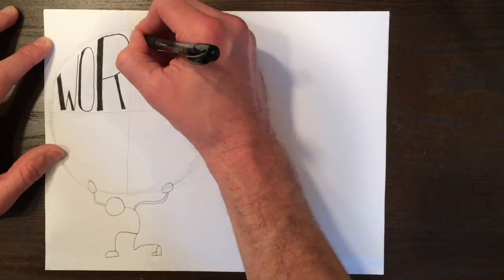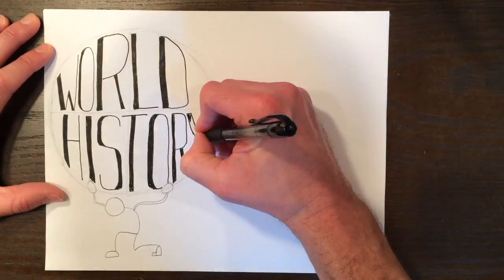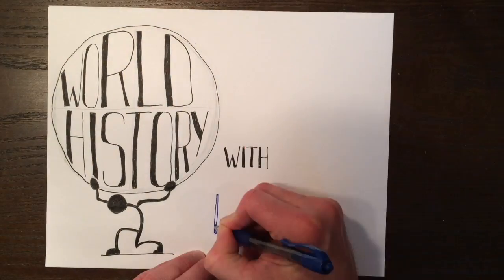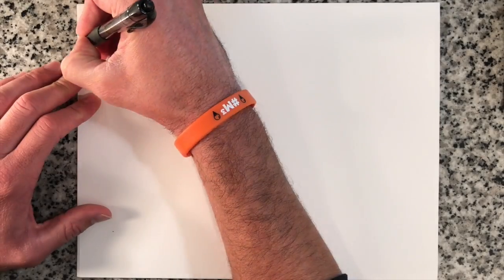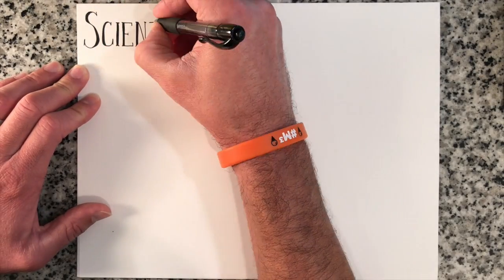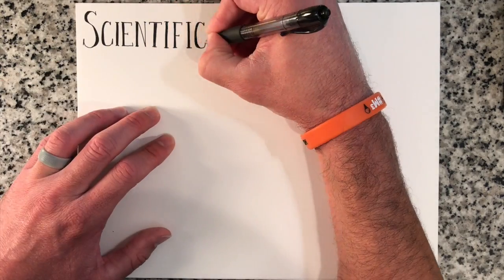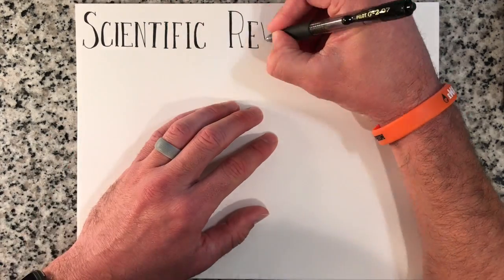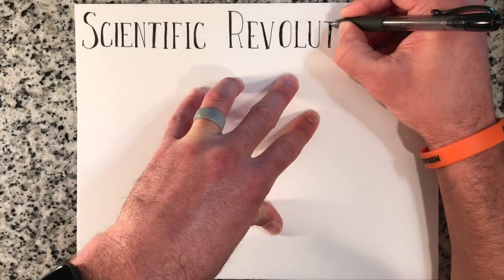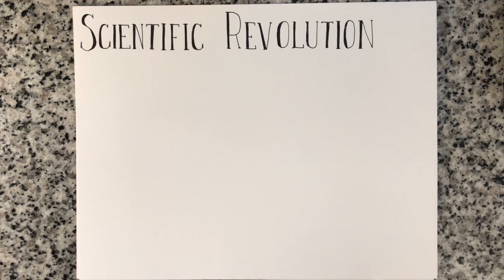Welcome to World History with Mr. Giese. In this episode, we will continue our discussion of major change in Europe and how people started to question their leadership in their life, but more specifically, how agreed upon ideas began to be called into question. In our last videos, you heard about absolute monarchy and how it became a thing of the past, but what else were people thinking about? What changes led to the dawn of modern science and the scientific revolution?